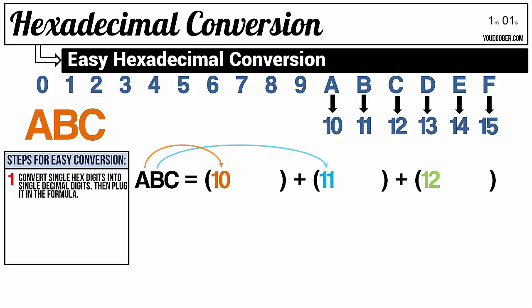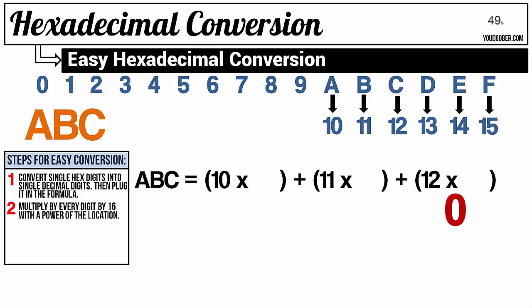So A equals 10, B equals 11, and C equals 12. They go on the formula as follows. Now we multiply those numbers by 16 with the power of the location they're in. So this is location 0, 1, and 2. If you have a larger hexadecimal number, you can go further.